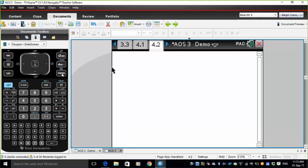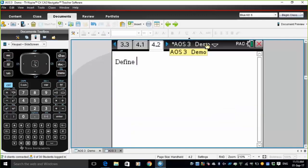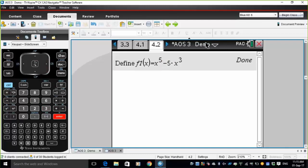So we want to define it. So let's go menu, actions, define. We will define the function f1(x) to equal x to the power of 5 minus 5 times x cubed. So that's the function defined.